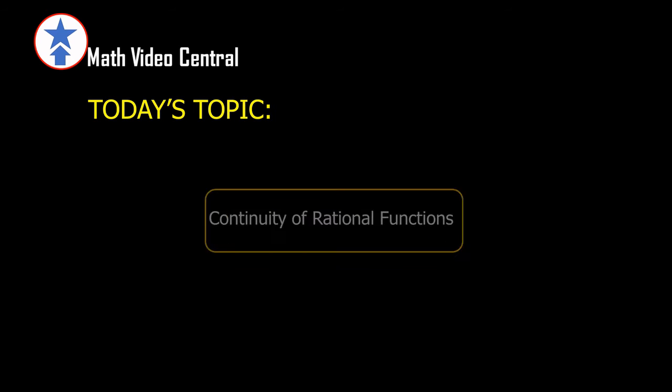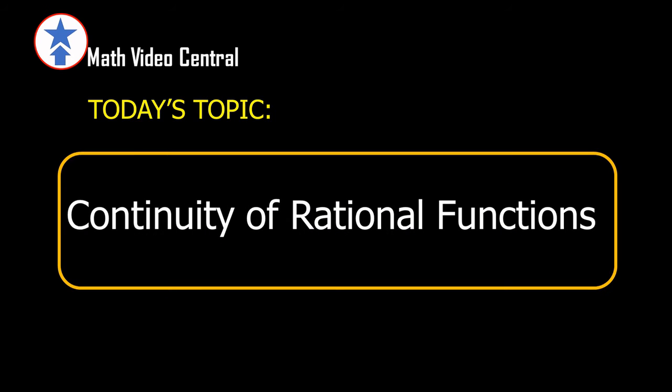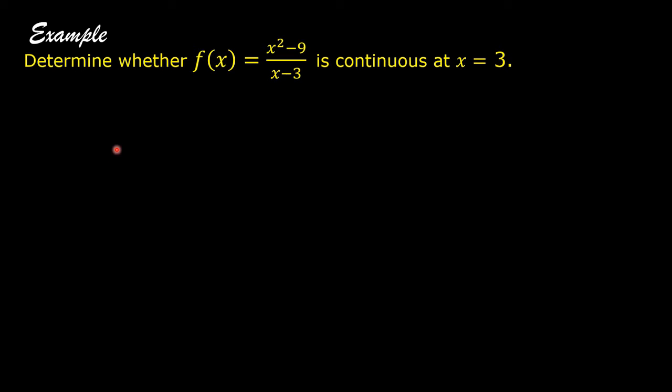Today's topic: Continuity of Rational Functions. Example — determine whether f(x) = (x² - 9) / (x - 3) is continuous at x = 3.